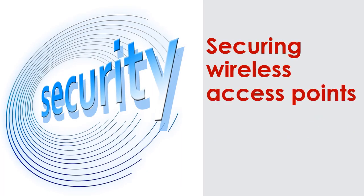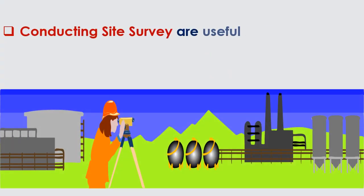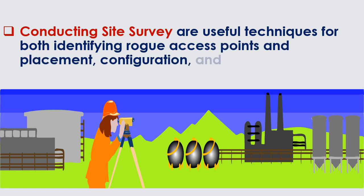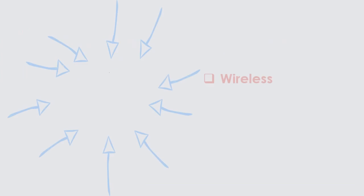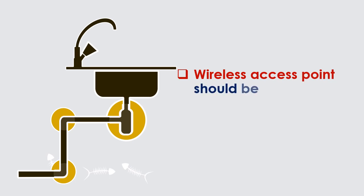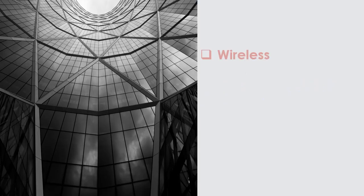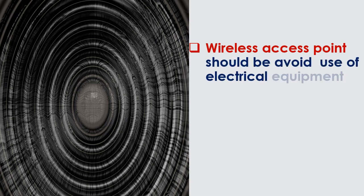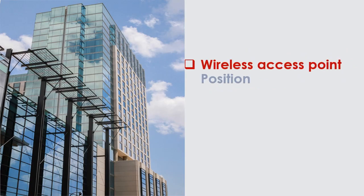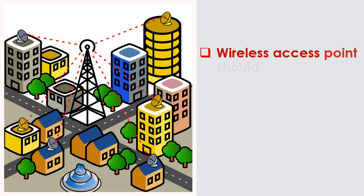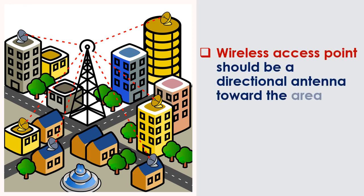Securing Wireless Access Points. Conducting a site survey is a useful technique for identifying rogue access points and for placement, configuration, and documentation of access points. Wireless access points should be in a central location, avoid solid physical obstructions, avoid reflective or flat metal surfaces, and avoid electrical equipment interference. External omnidirectional antennas should point vertically, and directional antennas should face the area of desired use.